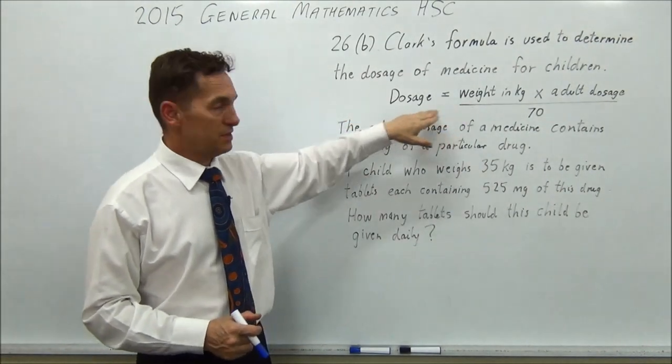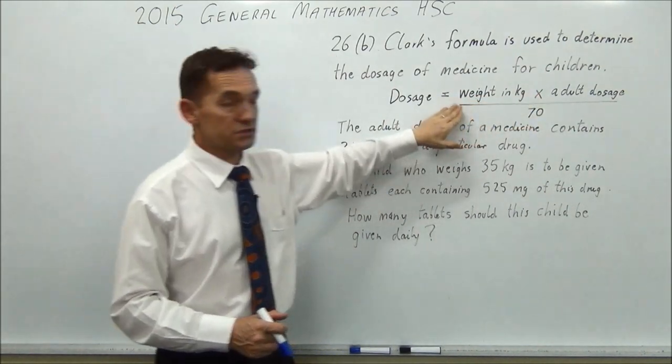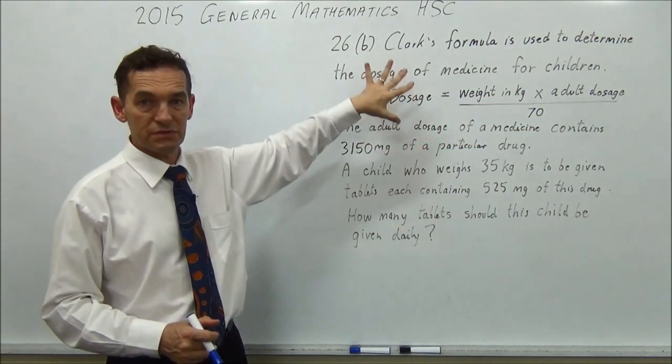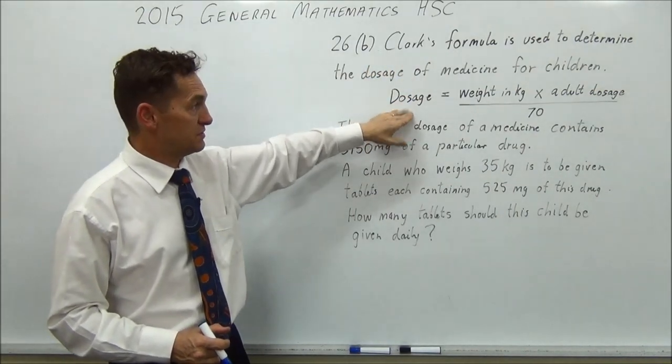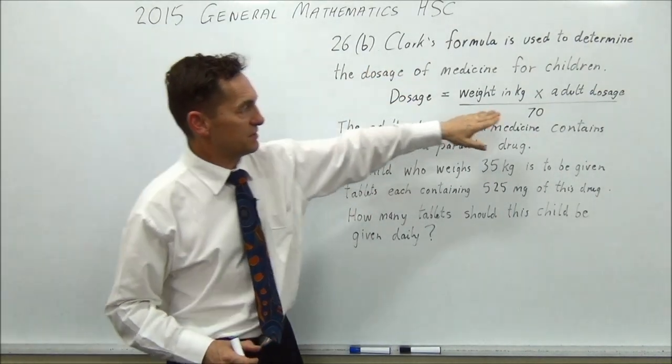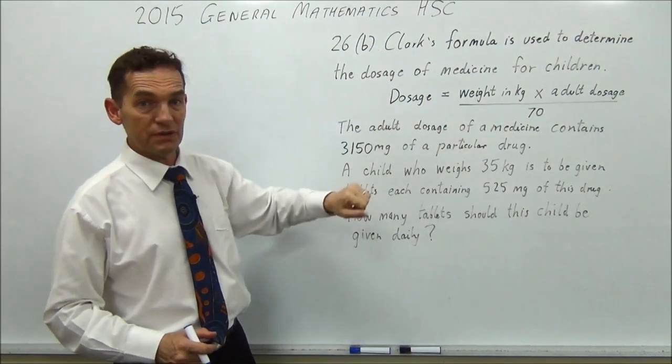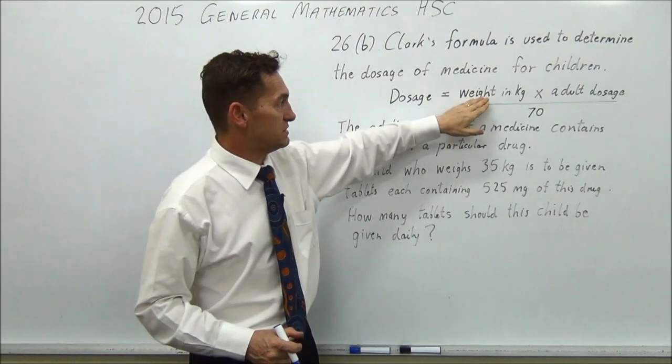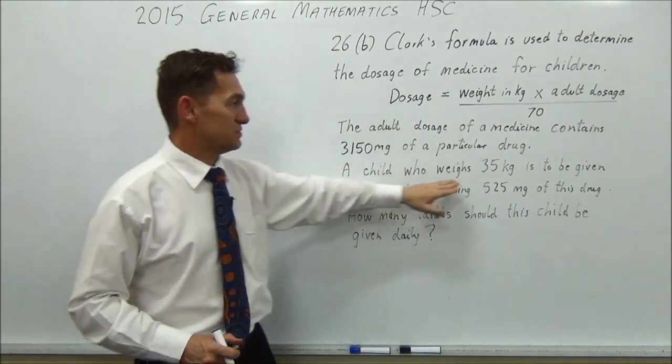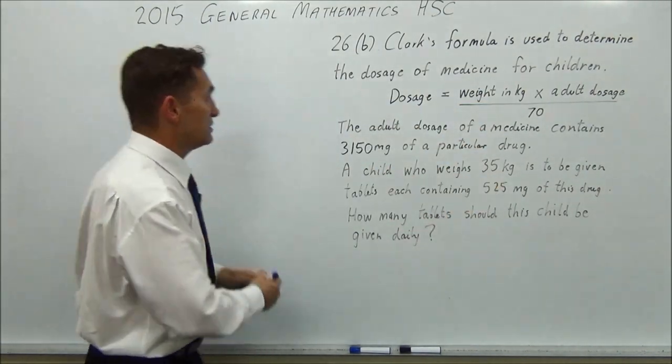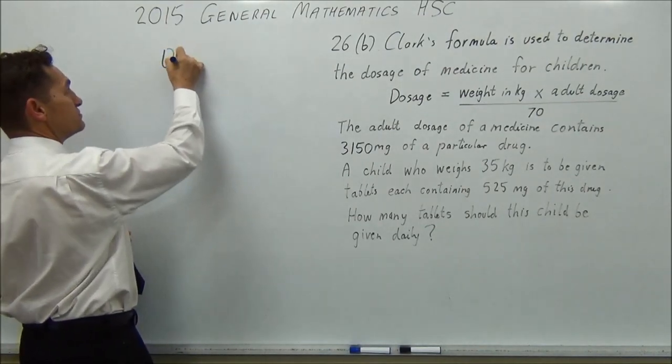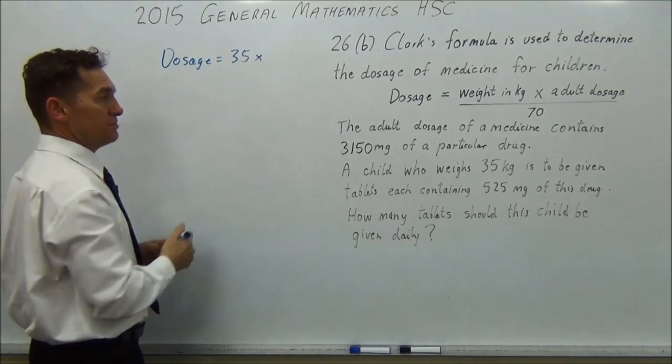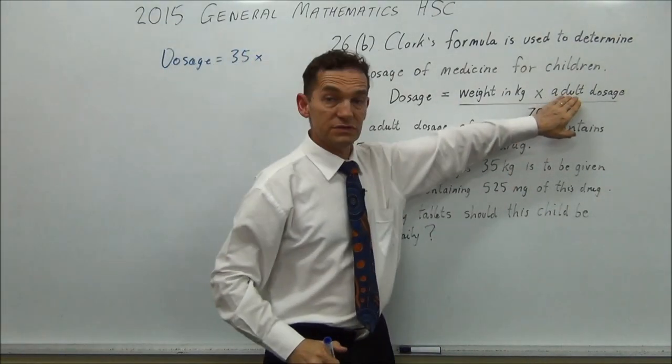So first of all, you've given a formula, and there's words in there. I would solve the formula and find out what this dosage is, regardless of what's going on in the question. But you need to do that anyway, but that's what I would do. As soon as you see something like that, think, okay, can I put the numbers in here to figure out what this is, and then re-read the question. So what is the weight in kilograms? Well, the child weighs 35. So our dosage is going to equal 35 multiplied by the adult dosage.